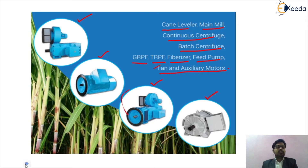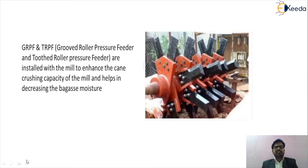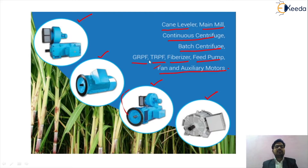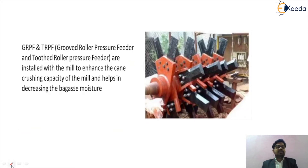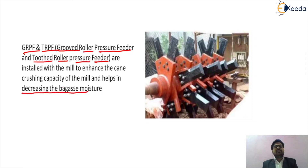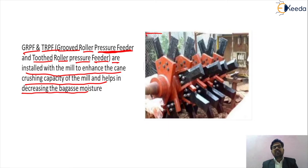Now we discuss what GRPF and TRPF mean. GRPF stands for Grooved Roller Pressure Feeder and TRPF stands for Toothed Roller Pressure Feeder. These are basically installed with the mill to enhance the cane crushing capacity and to help decrease the bagasse moisture. The first process in the sugar industry is preparing the cane into small pieces, and the GRPF or TRPF is shaped as a crusher to extract juice from the sugar cane.